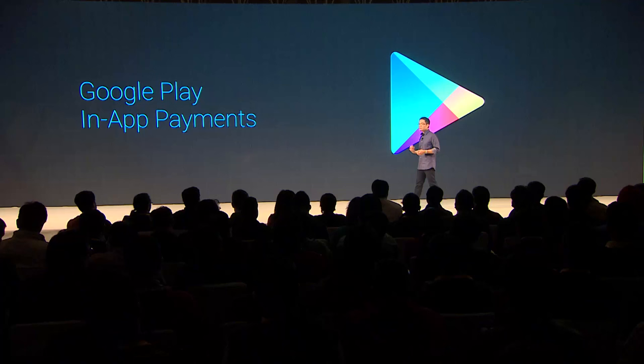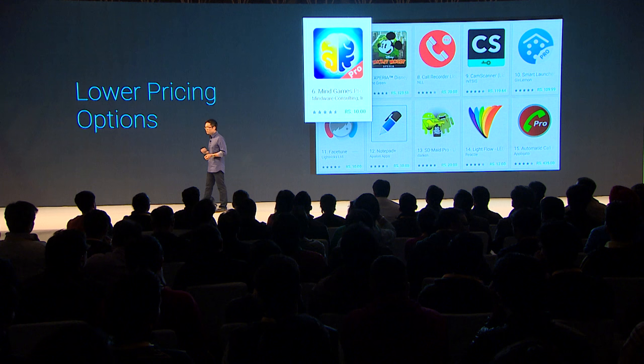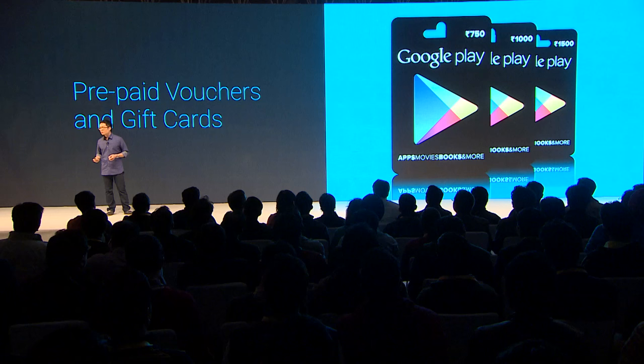Beyond ads, another great way to monetize is through in-app purchases. We've heard feedback about wanting more flexible pricing options, especially to tailor that for more local user needs. A few months ago, we introduced the ability to lower your price points on Google Play and make your app or your in-app content available for as low as 10 rupees. We've also been working hard to expand additional payment options with prepaid vouchers and gift cards, available in over 500 retail stores across 22 cities in India and also on e-commerce sites like Snapdeal and Amazon, and they can be purchased with cash on delivery.